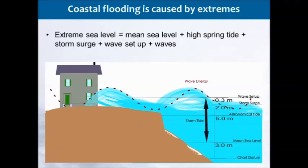Coastal flooding is caused by extremes. We're concerned about mean sea level; we mustn't forget about the tides. Then we have storm surges on top of that, and then we have wind waves — the short period waves and the swell waves that have caused so much coastal damage around Europe this winter. All of those combine to create the coastal hazard, and it's the total water level that you want to deliver. It's the only thing that makes sense to a coastal engineer.